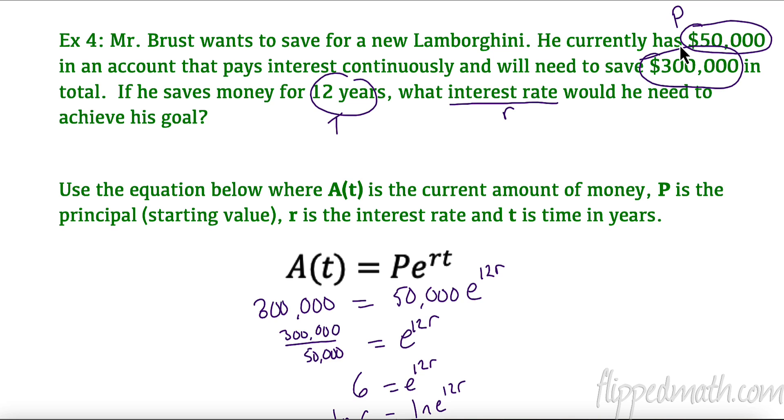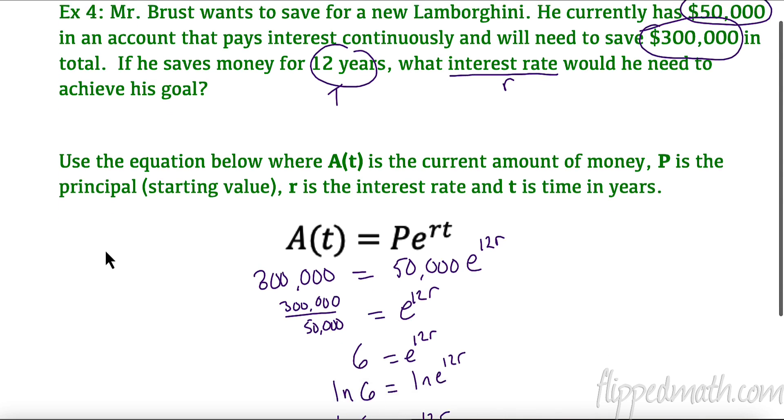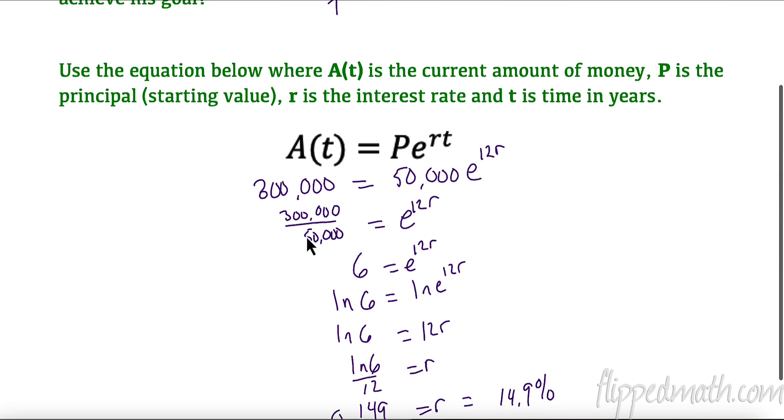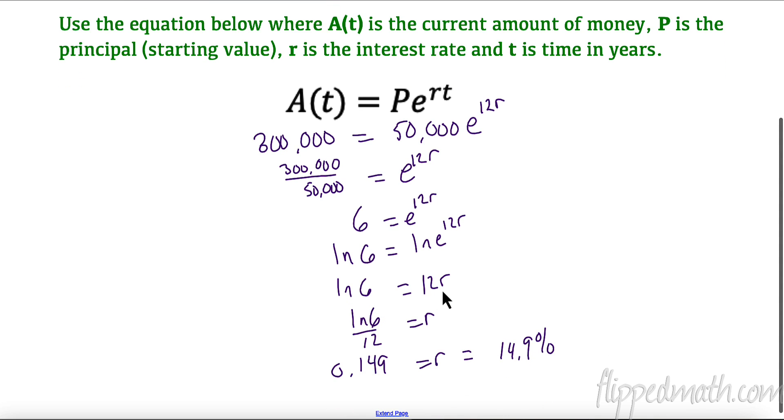Let's see how we plugged it in. The first thing I did was I divided by fifty thousand, that gave me six. To get rid of this e to the power of 12r, I took the natural log of both sides. That gave me the natural log of six equals 12r. I divided by 12 and I got 0.149, which really means he would need an interest rate of 14.9 percent. And that ain't gonna happen probably, so good luck getting that Lamborghini. Maybe if you found some really good stocks and bonds, but I don't see that happening.